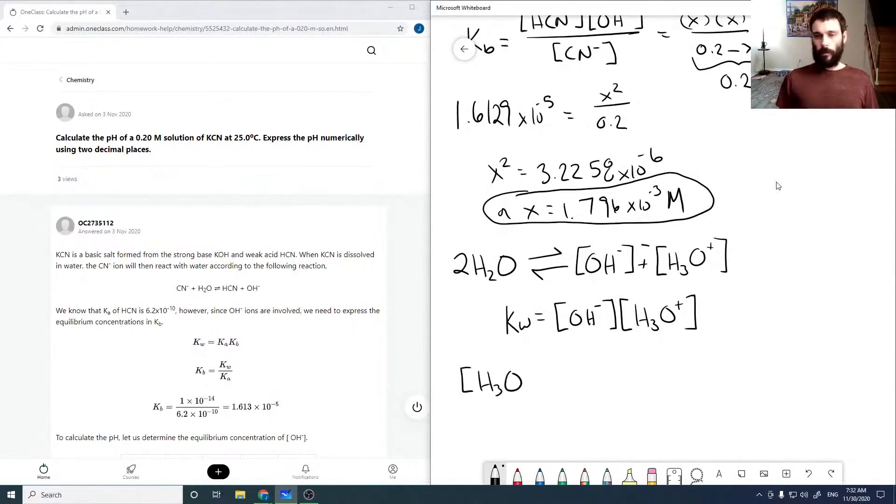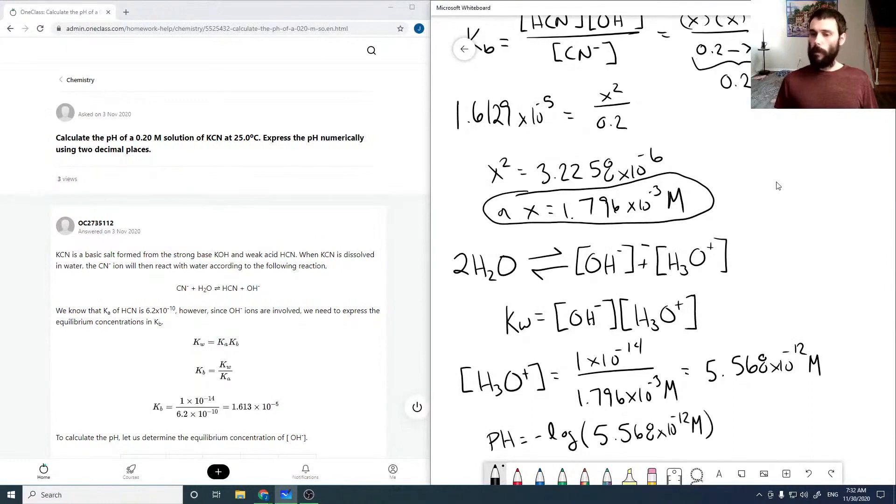Our H3O plus concentration is 1 times 10 to the minus 14, which is Kw, over our OH minus concentration, which comes out to be 5.568 times 10 to the minus 12 molar. So then our pH is the negative logarithm of this value.